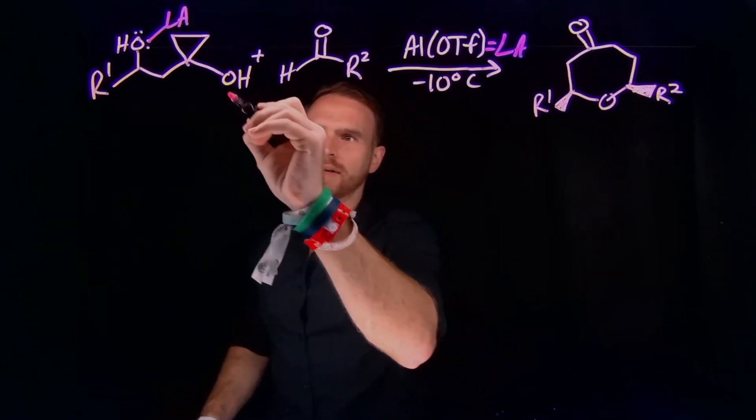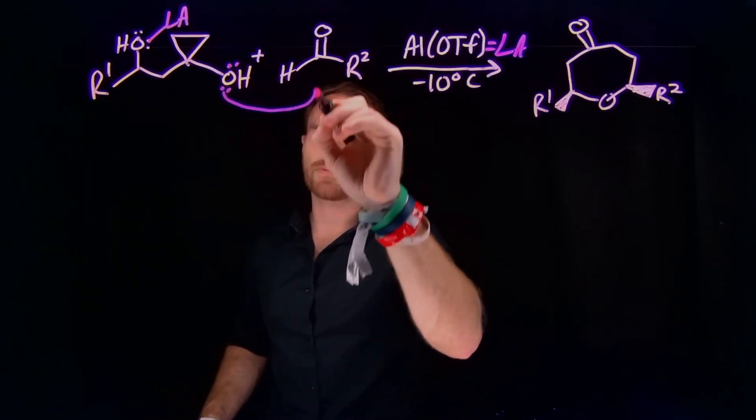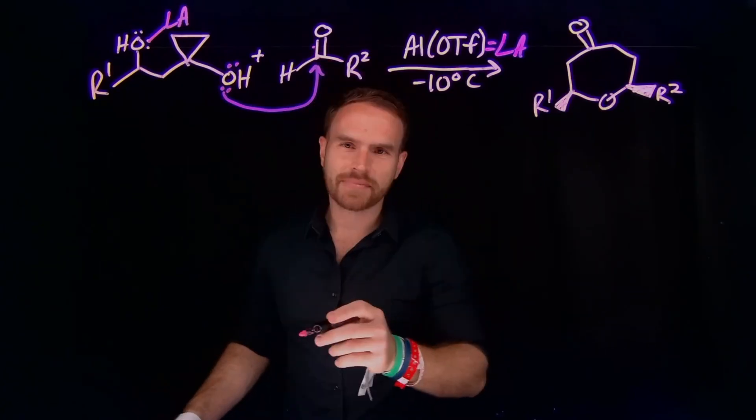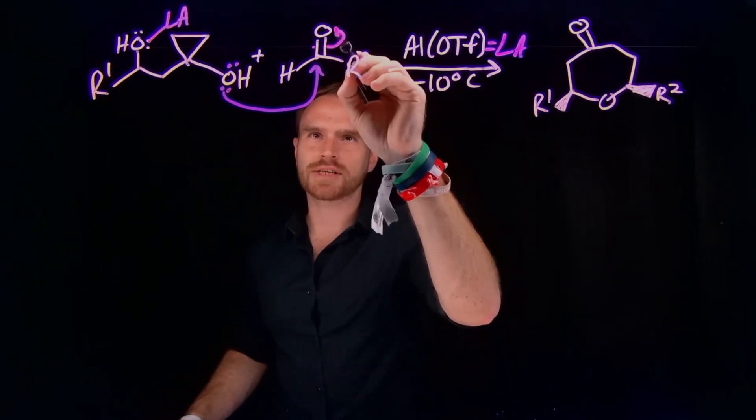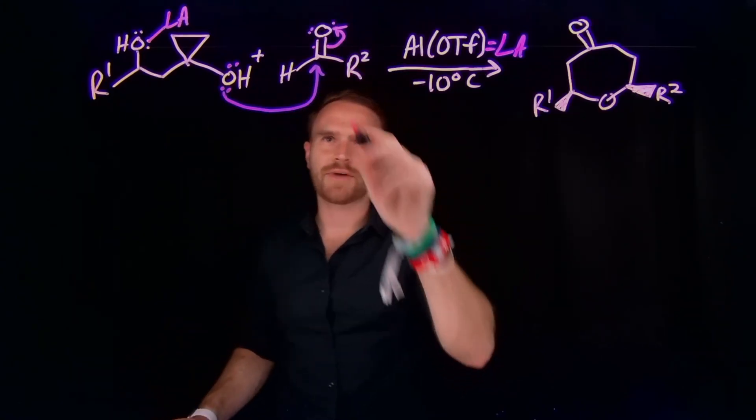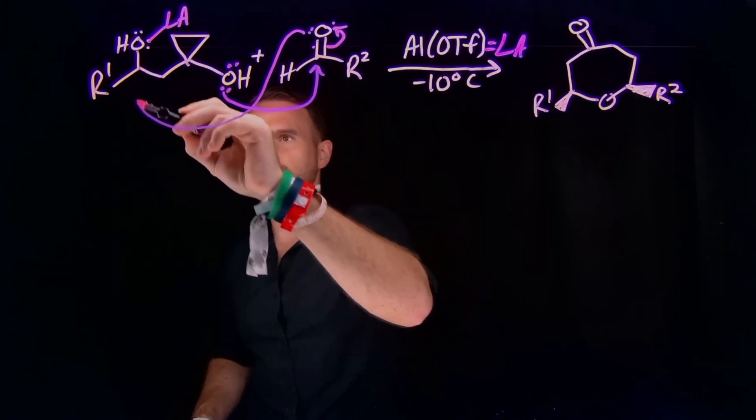From here what will happen is that the lone pair of electrons on our other oxygen will come and attack this carbonyl carbon of the aldehyde which is going to be very susceptible to nucleophilic attack and this is going to cause these pi electrons to come up and if everything happens all together then what we can also consider is the fact that these lone pair of electrons on oxygen will actually come around and attack this position.